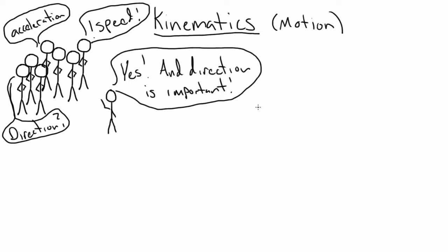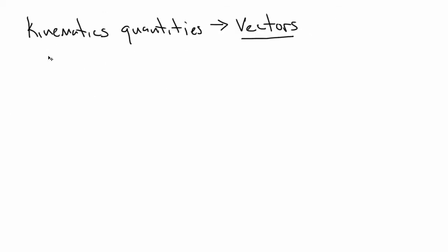As it turns out, it's the direction that differentiates the quantities that we typically associate with motion with those that are necessary to actually do meaningful calculations to describe motion.